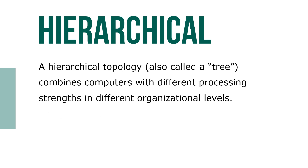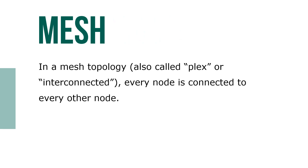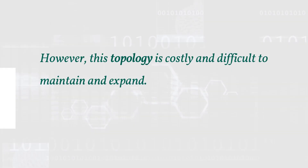A hierarchical topology, also called a tree, combines computers with different processing strengths in different organizational levels. Traditional mainframe networks also use a hierarchical topology. In a mesh topology, also called a plex or interconnected, every node is connected to every other node. This topology is costly and difficult to maintain and expand.